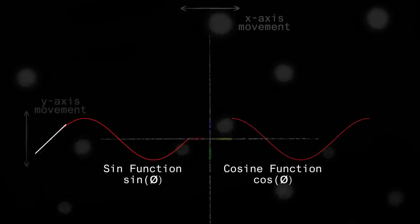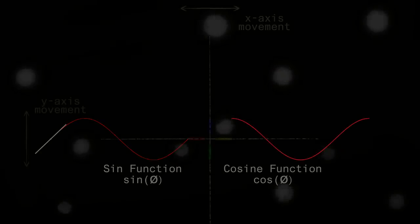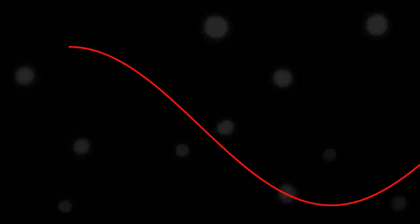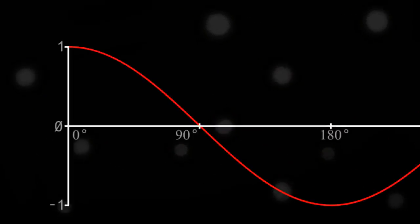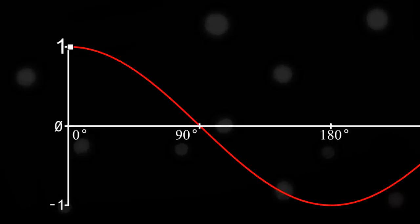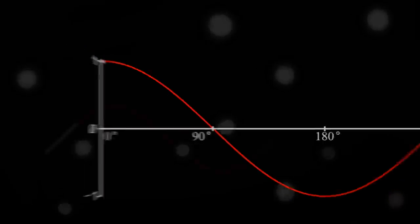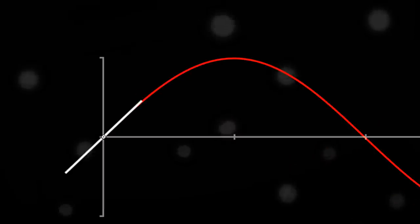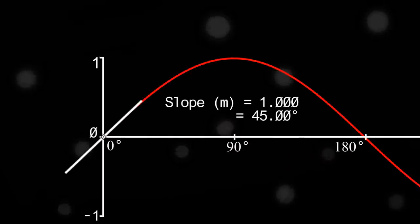Sine and cosine have a very special relationship. If we examine the cosine function at theta equals 0 degrees on the horizontal axis, we find that the value of x on the vertical axis is 1. If we examine the sine function at theta equals 0 degrees on the horizontal axis, we find that the value of y on the vertical axis is 0.